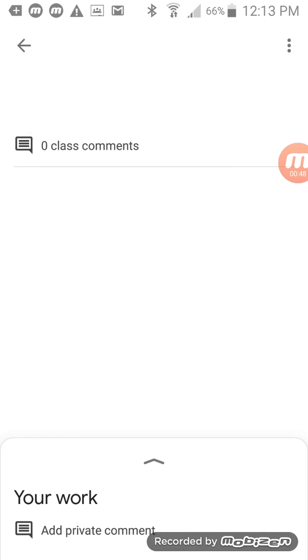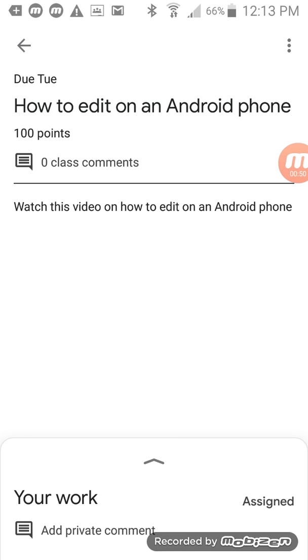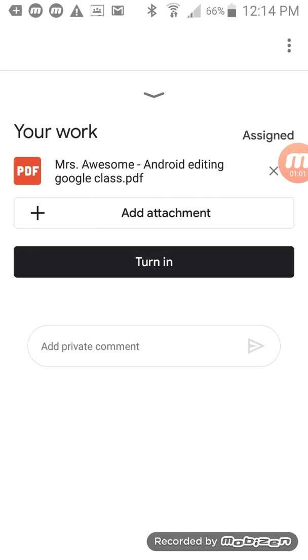I'm going to click on that assignment. Here are the directions: watch this video on how to edit on an Android phone. On the very bottom it says your work, add a private comment, and assign. Right on top of that you see an upside down V. Click it and it's going to take you to your work.